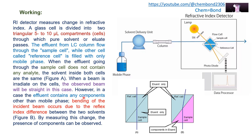However, when the effluent contains any component other than the mobile phase, bending of the incident beam occurs due to the refractive index difference between the two solvents — as shown in Figure B. In Figure B, one compartment is shown in blue containing only the mobile phase, and the other in pink containing the mobile phase along with the solute. There is now a difference in refractive index, and as the light passes through the sample cell it bends. That difference in refractive index is measured and is directly proportional to the amount of sample in the cell. By measuring this change, the presence of the component can be determined.